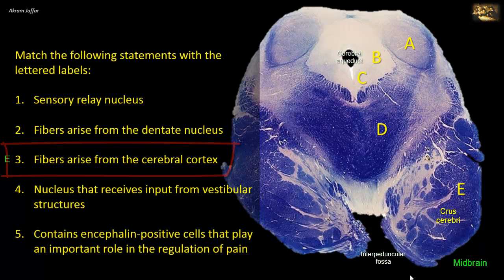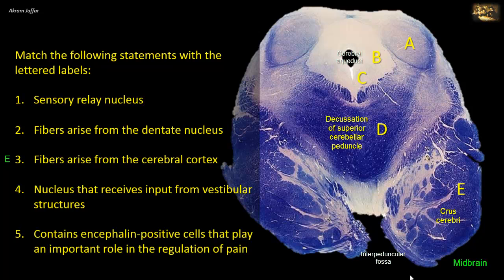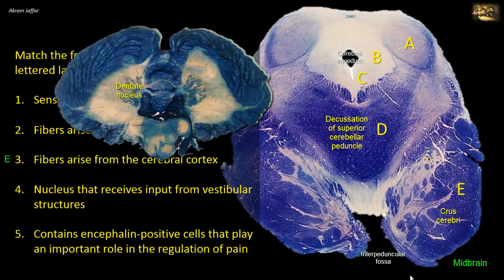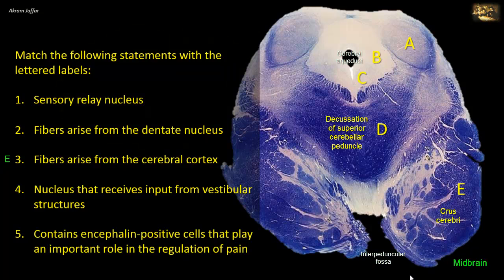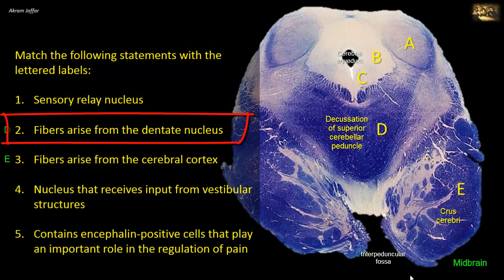Note that the section is at the level of the decussation of the superior cerebellar peduncle, shown in D. The decussating fibers originate from cerebellar nuclei, like the dentate nucleus, and they project to the thalamus and the red nucleus. The superior cerebellar peduncle is the principal efferent bundle of the cerebellum, although it also contains some afferent fibers like the ventral spinocerebellar tract. Thus D, the superior cerebellar peduncle, matches with two: fibers arising from the dentate nucleus.